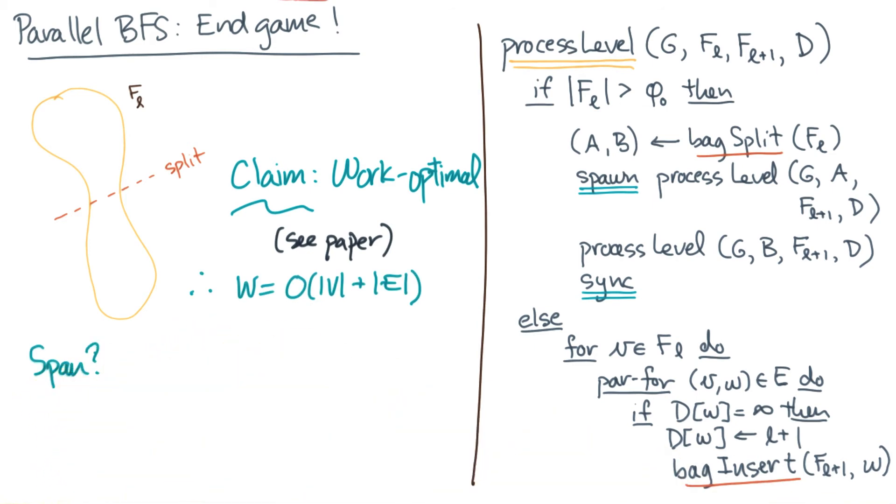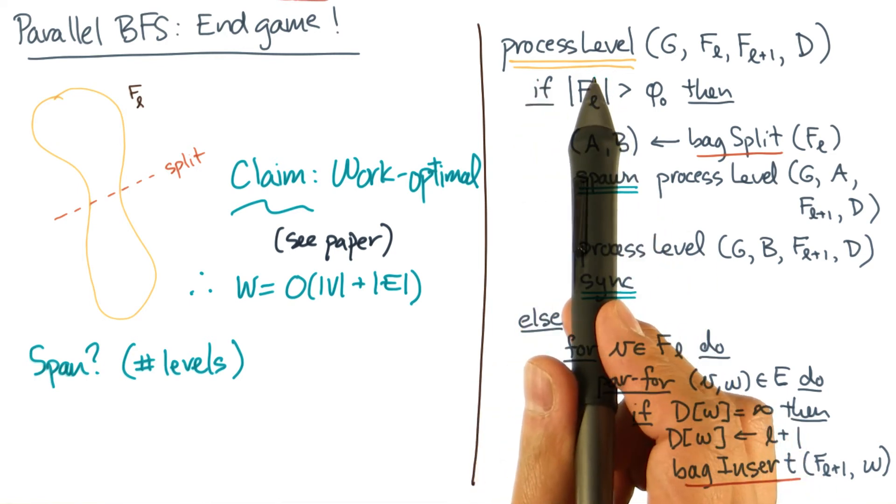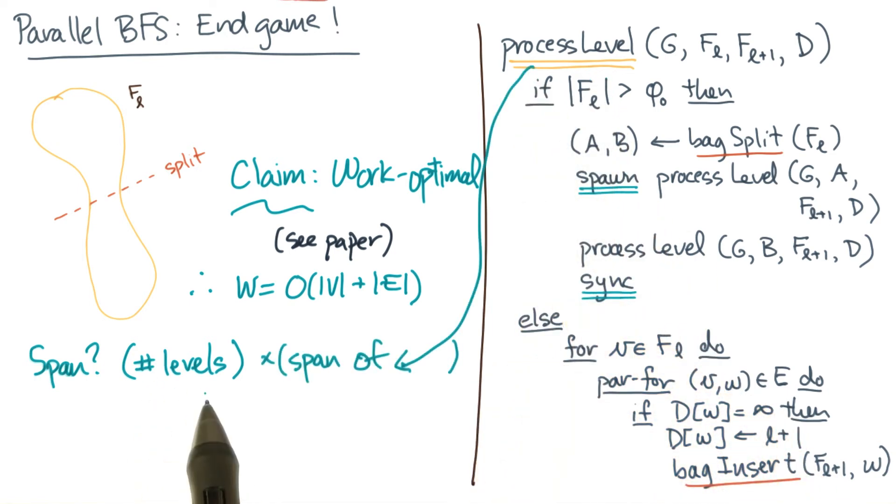Now what about the span? The span is affected by a couple different factors. The first factor is the number of levels. That's essentially the outermost while loop. The while loop's not shown here. That was the pseudocode that was on the left side of the screen earlier. The second factor is the span of process level.